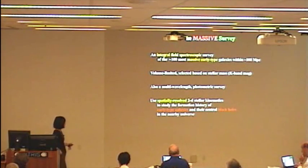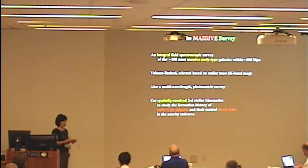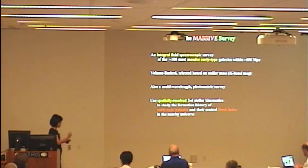So, what is this survey? It's an IFU survey of nearby most massive galaxies. We chose the selection effect, we tried to keep it simple. So we would like to do a volume limit, and it's purely based on stellar mass selection. So stellar mass larger than 10 to the 11.5, and we use the two-mass K-band magnitude as a proxy for stellar mass.